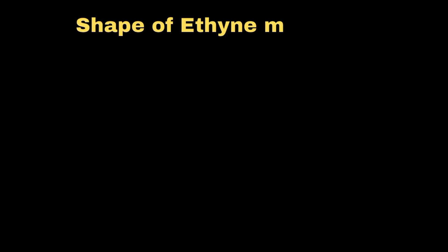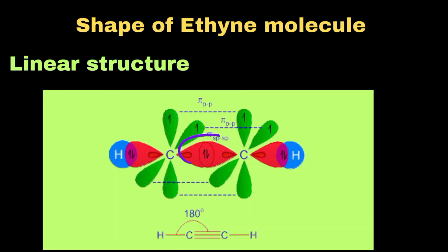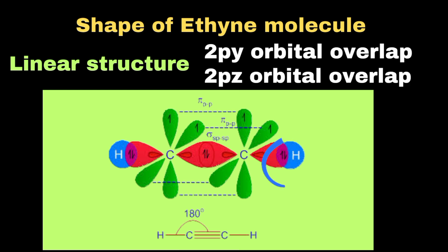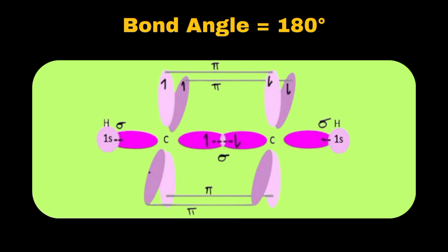The shape of the ethyne molecule based on hybridization is linear. One hybridized orbital forms a single bond with hydrogen, and the second forms a sigma bond with the carbon atom. The first pi bond is formed by overlapping of the unhybridized 2py orbital of one carbon with another carbon, and the second pi bond is formed by side-to-side overlapping of the two 2pz orbitals. In this way, one sigma and two pi bonds are formed between the two carbons. The bond angle is 180 degrees.